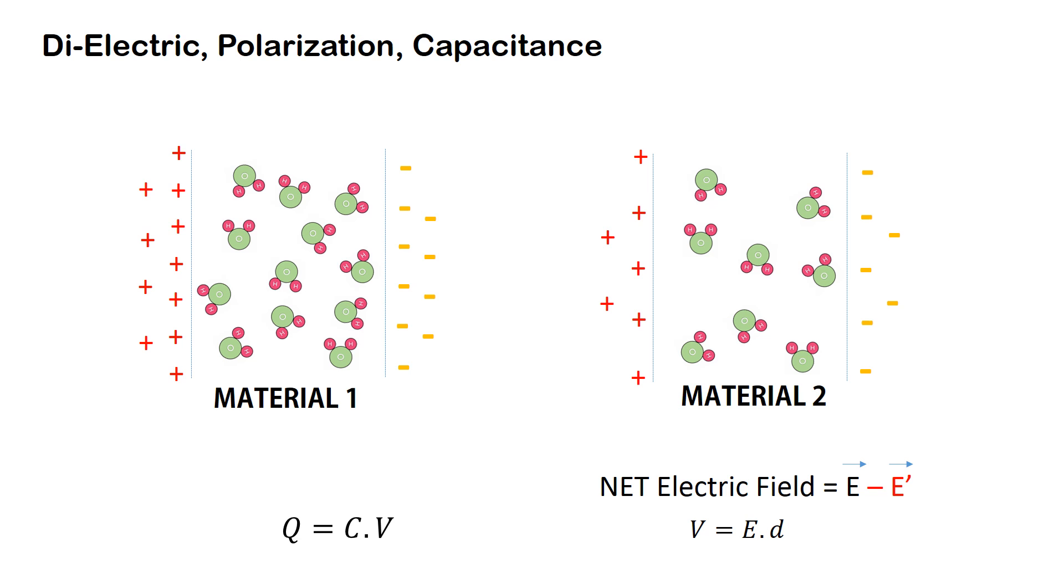Now if we have two materials and one of the materials has a larger dipole moment, it is obvious that it will accumulate more charges. And this is how a difference in dielectric property leads to a difference in capacitance.